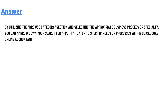By utilizing the Browse Category section and selecting the appropriate business process or specialty, you can narrow down your search for apps that cater to the specific needs of your process within QuickBooks Online Accountant. Thank you very much for watching the video. If you have any questions, just leave a comment and I will get back to you as soon as I can.